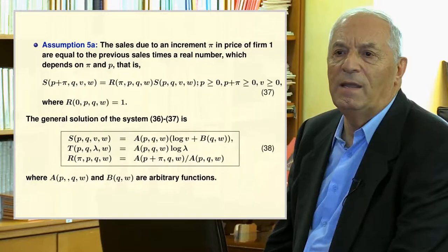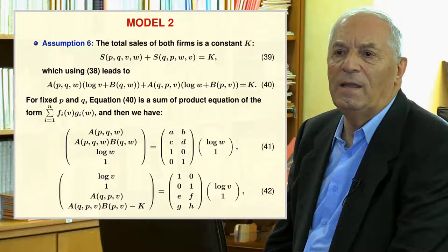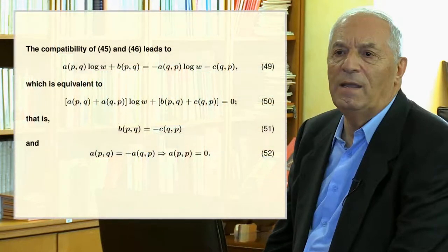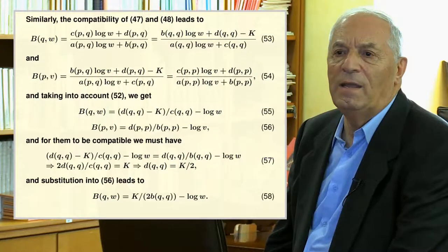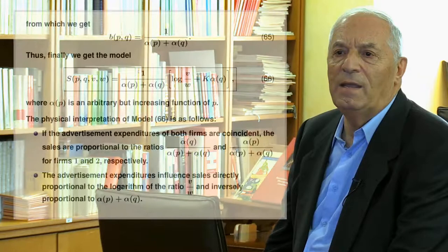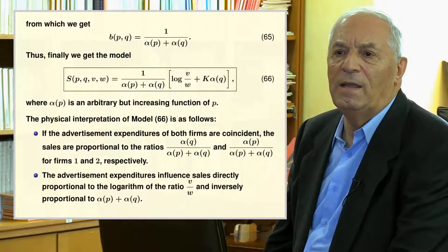In Model 2, Assumption 6 states that total sales of both firms is a constant K. Equations 38 and 39 give equation 40. Since for fixed P and Q equation 40 is a sum-of-product equation, we write expressions 41 and 42 where 43 must hold, implying 44 and then 45 to 48. Further operations yield relations between the B and C functions and expression 52. Imposing compatibility conditions derived from 47, 48, and 52, we obtain the B function. After this involved derivation, we obtain the lower-case b function in 65, and finally the general solution of our model is expression 66, where alpha is an increasing arbitrary function.